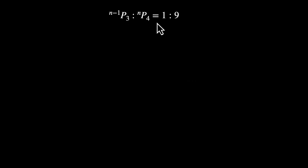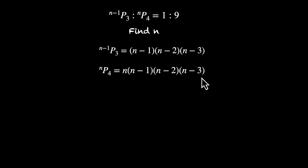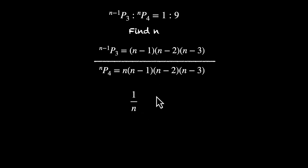Now let's practice permutation. (n-1)P3 to nP4 equals 1 to 9. Find the value of n. We're selecting and arranging here. (n-1)P3 is (n-1)(n-2)(n-3), and nP4 is n(n-1)(n-2)(n-3). Dividing these, (n-1), (n-2), and (n-3) all cancel out, leaving 1 over n equals 1 over 9. Cross multiplying, n equals 9.